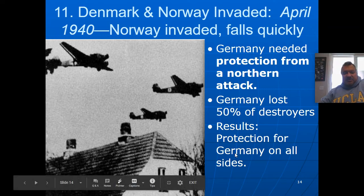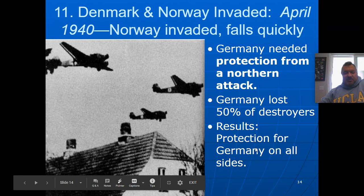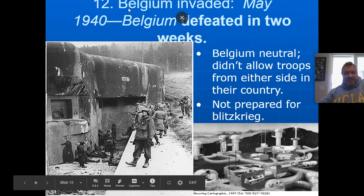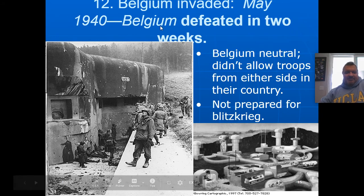The result is that Germany is now protected on the north and on the east, so they look west next. In May 1940, the Germans invade Belgium, and Belgium is defeated in just two weeks. This is a picture of the Maginot Line, which I mentioned when we looked at the dictators. The Germans just went around the Maginot Line — that's why they went through Belgium.